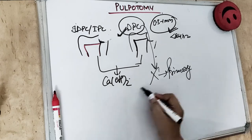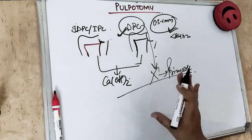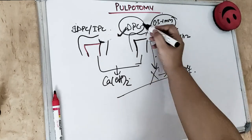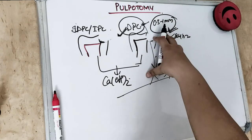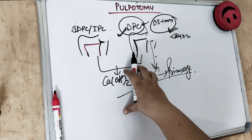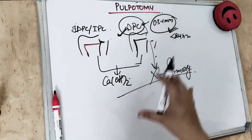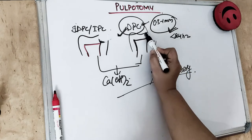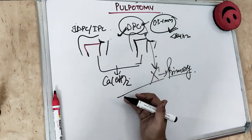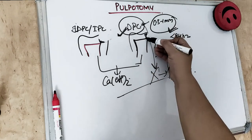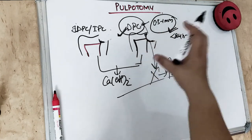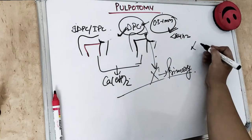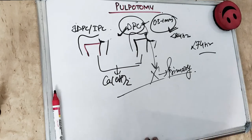We have covered those cases. Today's video will talk about when the carious lesion reaches the pulp. Direct pulp capping applied to mechanical or traumatic exposure under 24 hours, but pulpotomy applies when the carious lesion reaches the pulp or when the exposure is less than 72 hours.